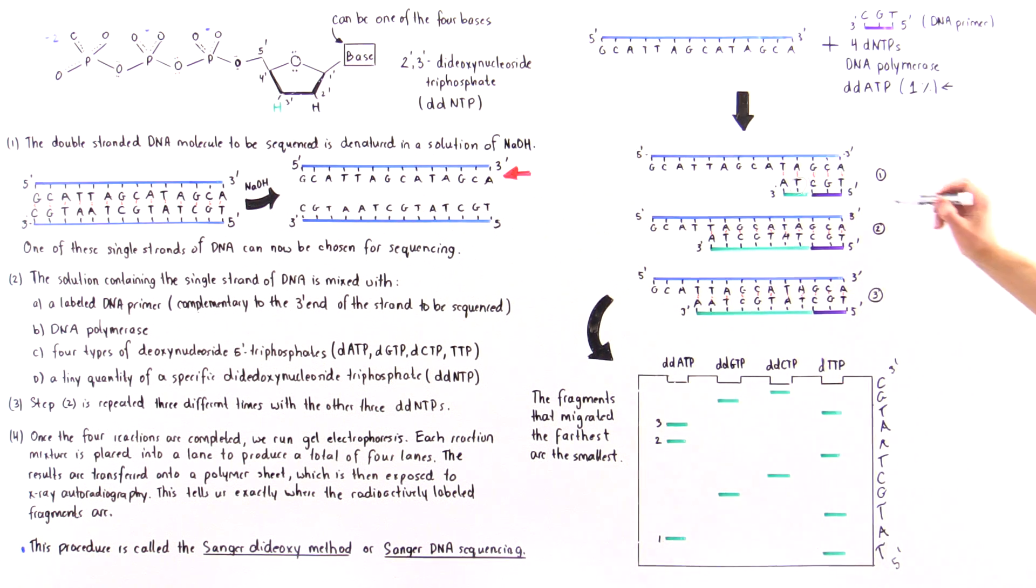So if we begin with this DNA primer, the DNA primer contains the five prime end, then we have TGC, and then we continue with these.